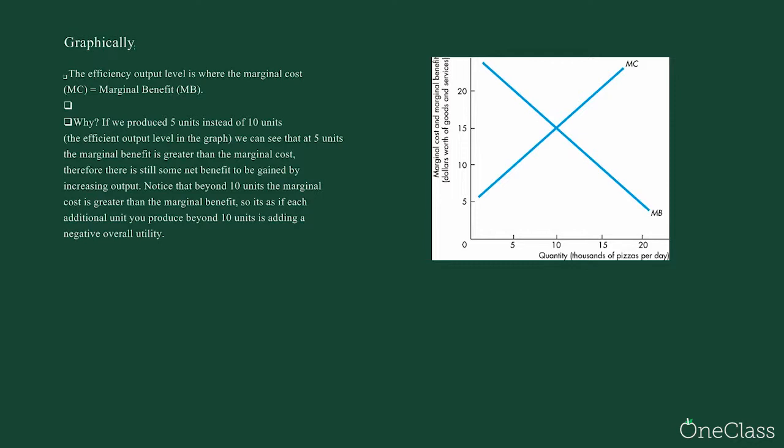A marginal cost to an individual might be lost revenue, tuition fees, or the actual cost of a product, whereas a marginal cost to a business might be employee cost, overhead cost, and other things like that.